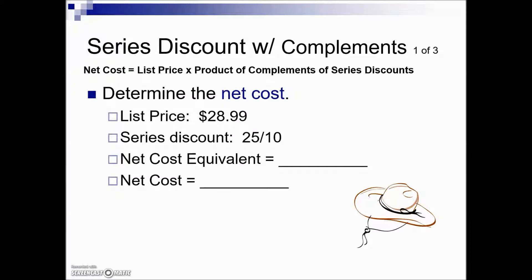In this next problem, we're dealing with series discounts. Sometimes a series of discounts are due to price changes, the size of orders placed with suppliers, geographical location, seasonal fluctuations, or even level of competition. We can also use complements to determine a net cost. The net cost is found by taking the list price times the product of the complements of the series discounts — product meaning we're multiplying these together.